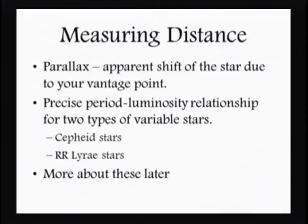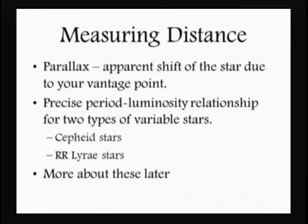There are a couple of ways to measure distance. One is measuring distance by parallax, and the other involves a period-luminosity relationship within stars. I want you to physically do this: hold one arm out at arm's length with one finger up, then open and close one eye. What you should see is the background shifting — that apparent shift is what we call parallax. It's the apparent shift of a star due to the way we're looking at it.